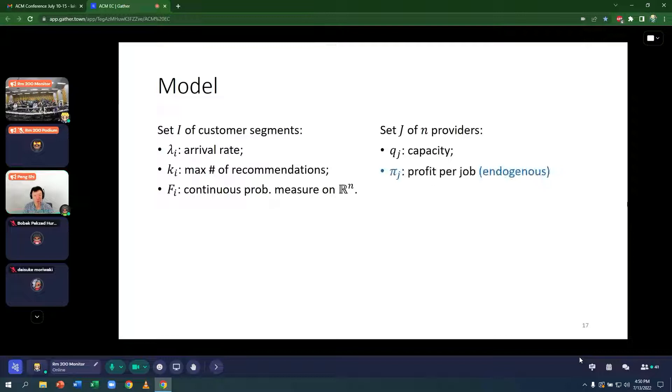And there's an endogenous profit per job pi_j. I put it as blue because it's not a model primitive, but it is determined based on supply and demand. So in this model, on the left, the customers arrive one by one. And on the right providers stay on the platform and can serve many customers.